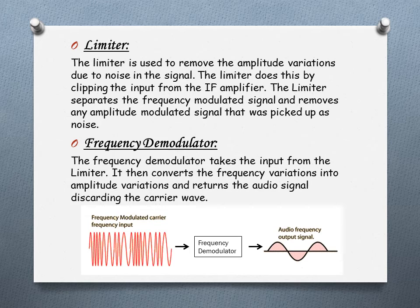The next part is the frequency demodulator. Demodulation is extracting the original information-bearing signal from a modulated carrier wave. The frequency demodulator takes the input from the limiter, converts the frequency variations into amplitude variations, and returns the audio signal by discarding the carrier wave. Some of the audio is fed back to the oscillator as automatic frequency control.